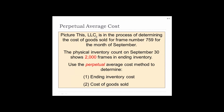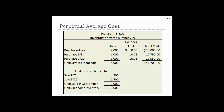Perpetual average cost. LLC is determining the cost of goods sold for frame number 759 for the month of September. The physical inventory count on September 30th shows 2,000 frames in ending inventory, and the perpetual average cost method is used. At the beginning of the month they had 2,000 units at $10 per unit for a total cost of $20,000. Purchases on 9-3: 1,000 units at $10.75, total $10,750. On 9-21: another 1,000 units at $10.95, total $10,950. Units available for sale: 4,000 units, total cost $41,700.